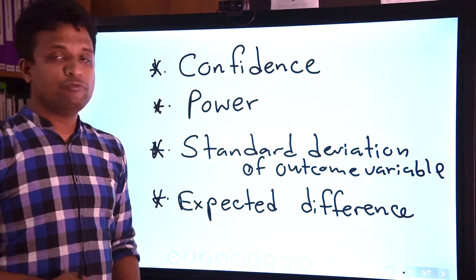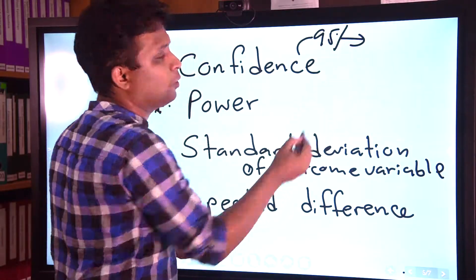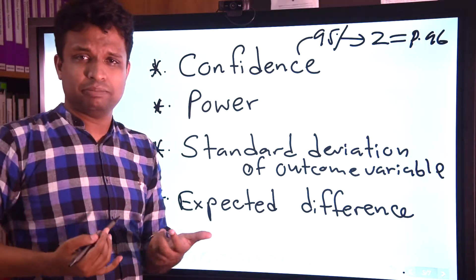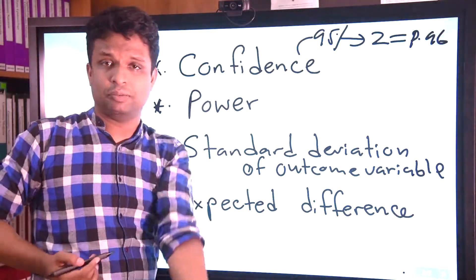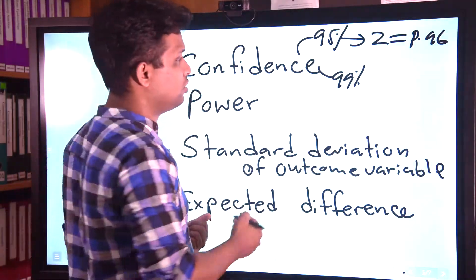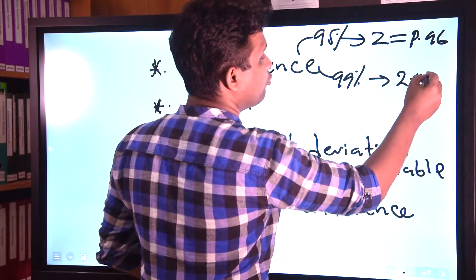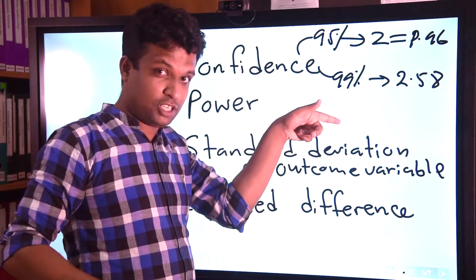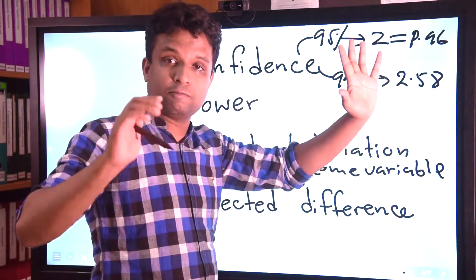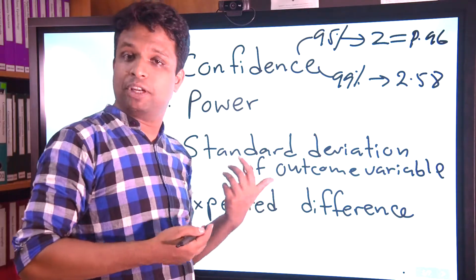The major factor is the confidence level. If you are interested in 95%, we know Z equals 1.96. For this specific example, I am applying 99% confidence. The Z value for a 99% confidence interval is 2.58 — that is, mean plus or minus 2.58 standard deviations. If it is 99.7% you can apply 3. I discussed these things in several of my previous lectures.